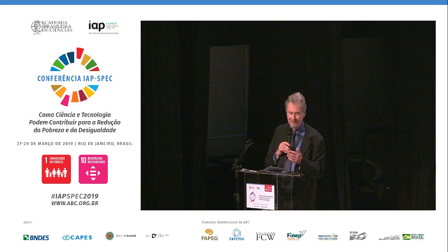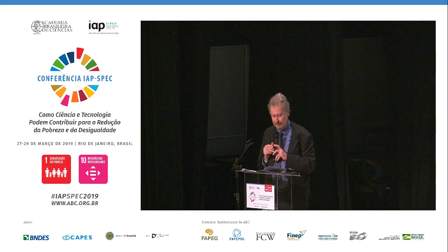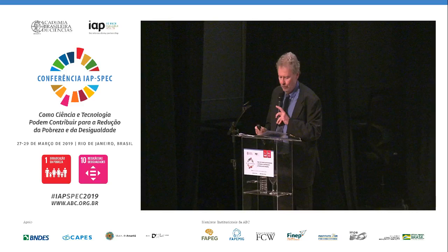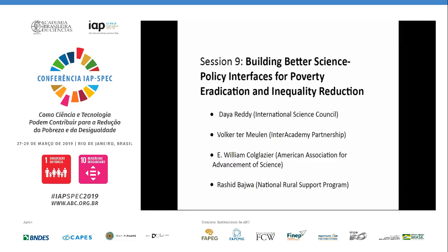The title of the session is Building Better Science Policy Interfaces for Poverty Eradication and Equality Reduction. We have four speakers. Daya Reddy is president of the International Science Council. Fokker Termoilen is president of the Inter-Academy Partnership. William Koglaser is editor-in-chief of Science and Diplomacy and senior scholar at the American Association of Science, and also served as the science and technology advisor to the Secretary of State from 2011 to 2014.